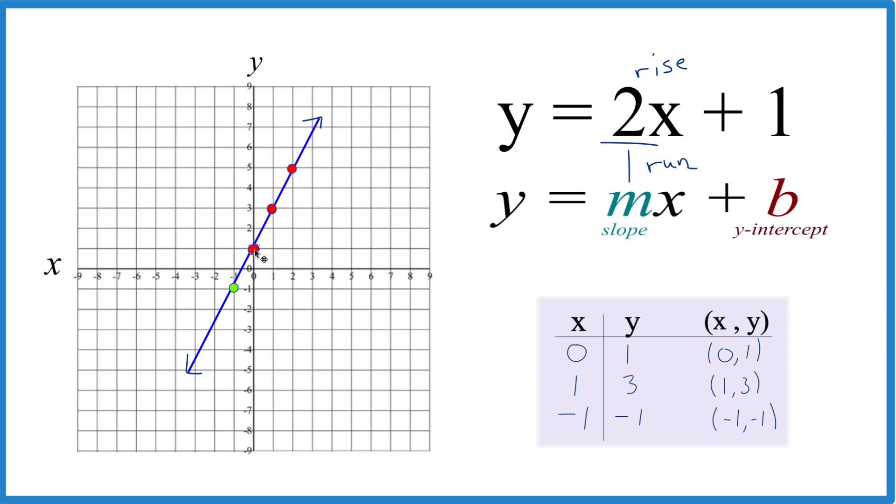Even go in the opposite direction. If you go down 1, 2, then to the left, the opposite direction there, there's another point. Go down 1, 2, to the left, another point.